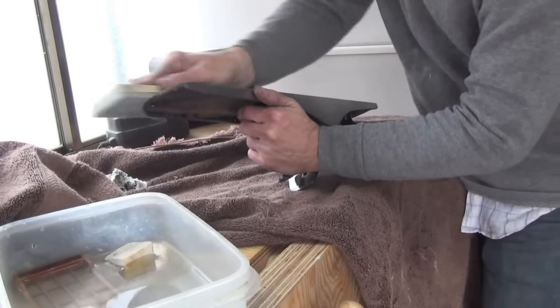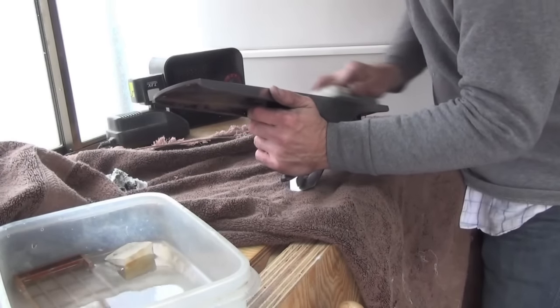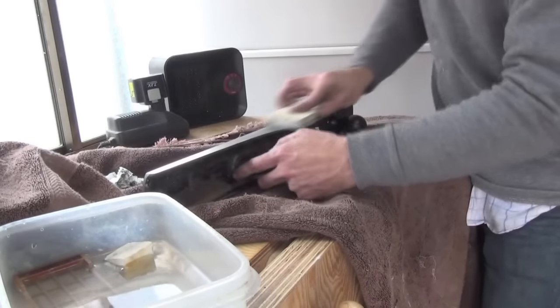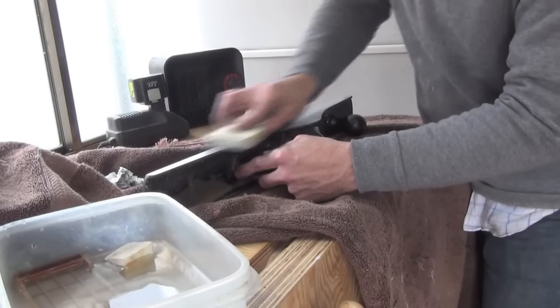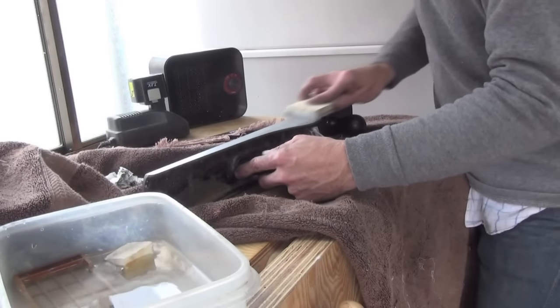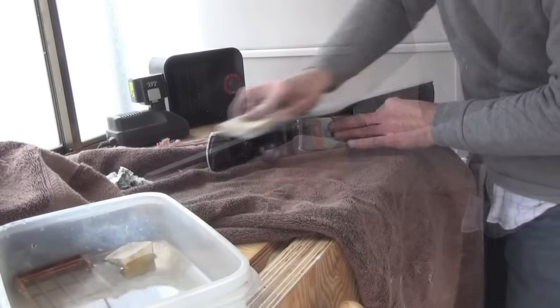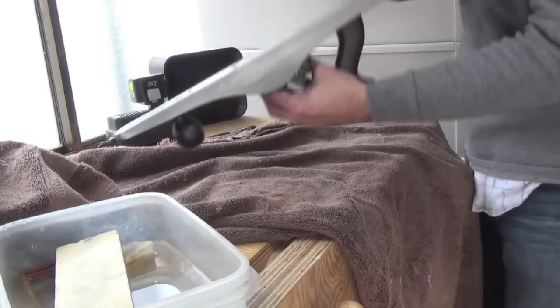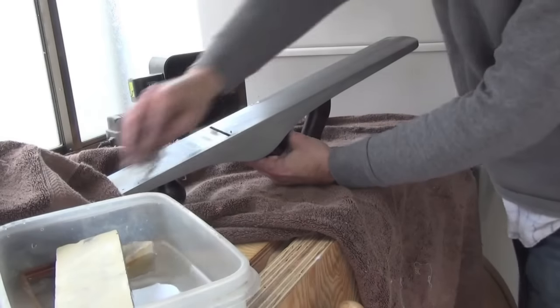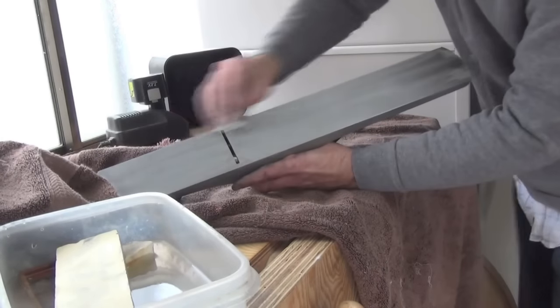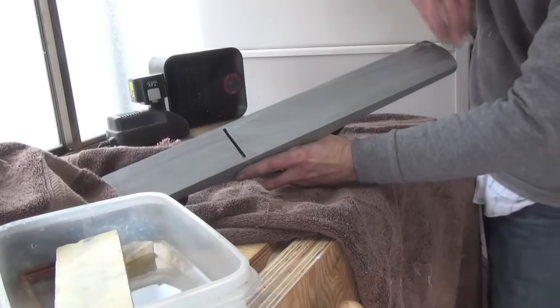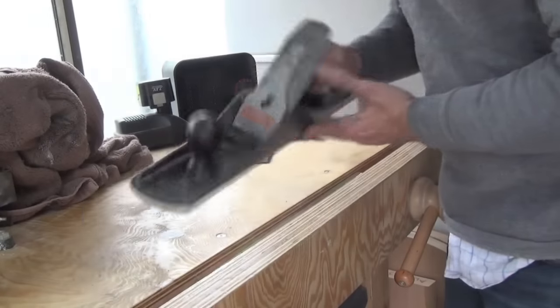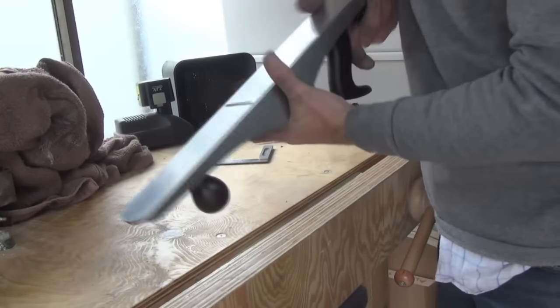And then with that done, you work the sides. Clean off. And then you can switch to a finer grade of stone. Because I've got them, I'll just take it up to 1200. May as well. So now we have a nice flat, true sole.